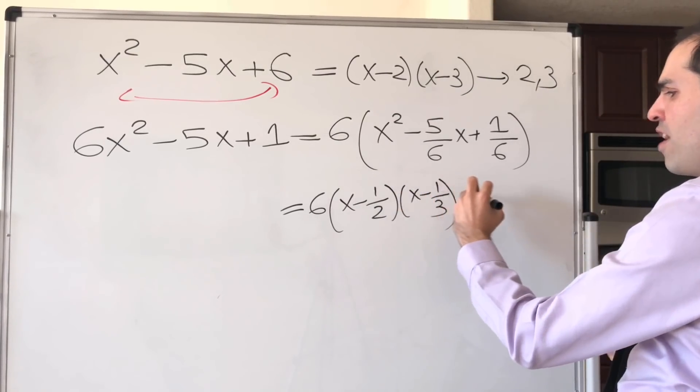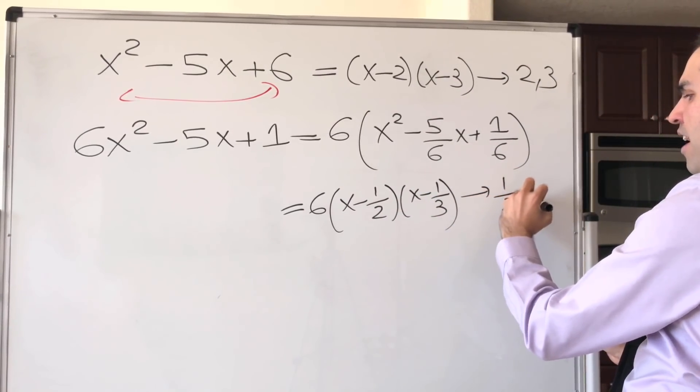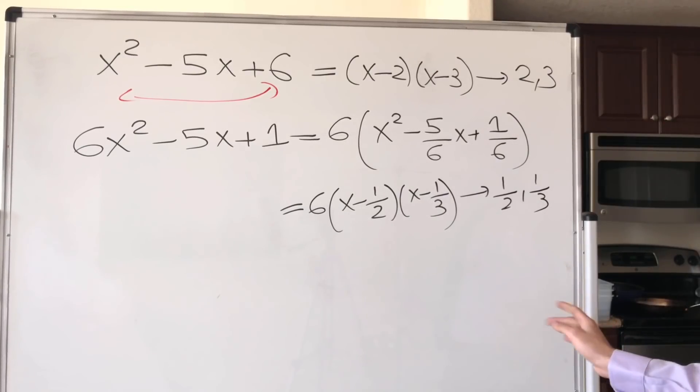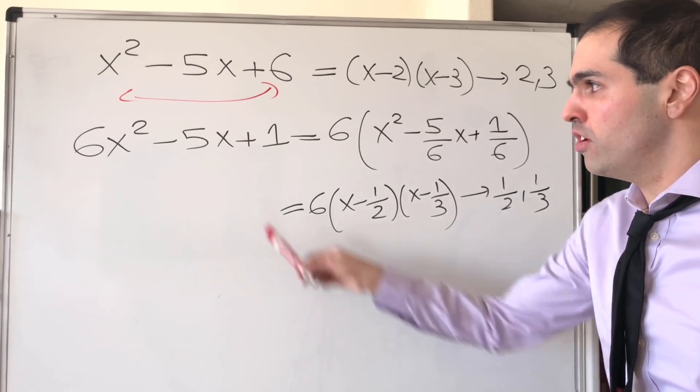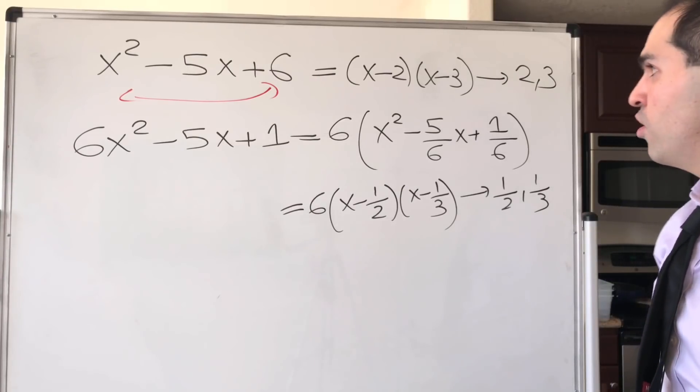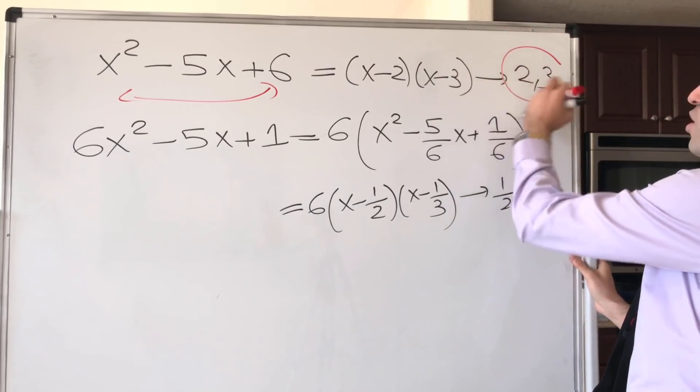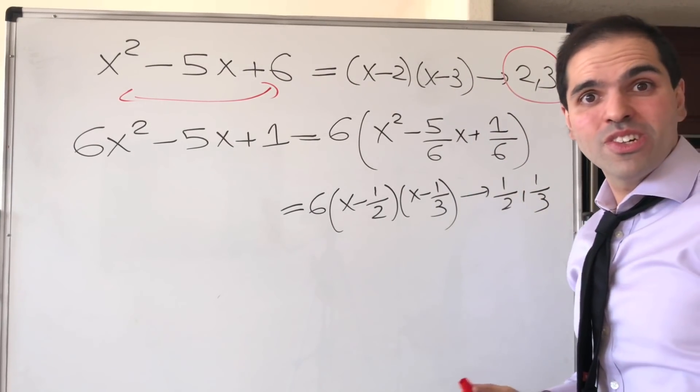which therefore has zeros 1/2 and 1/3. And notice, this 1/2 and 1/3, the zeros of the new polynomial, are precisely the reciprocals of the original roots.